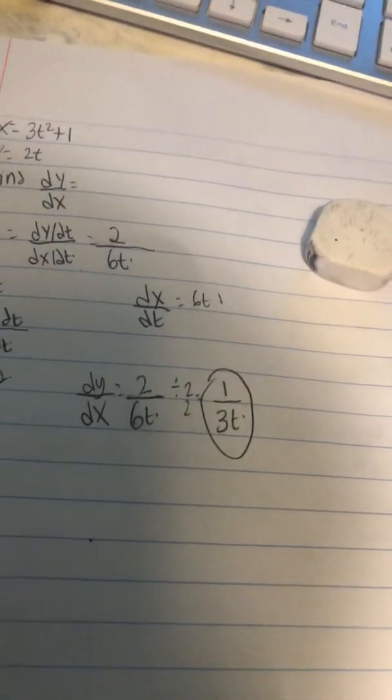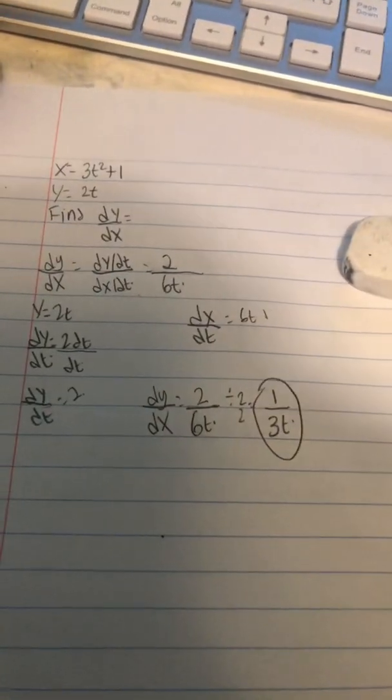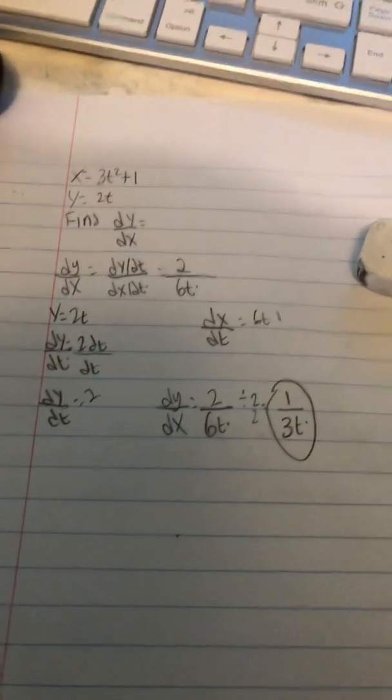So dy dx ends up being 1 over 3t, so this is the answer for this one. Let me know if I made any mistakes. I believe this is the answer.